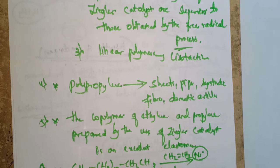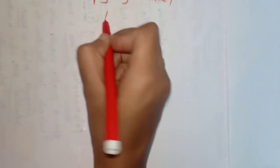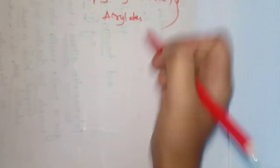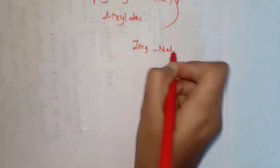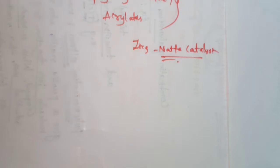These are the important applications of Ziegler-Natta catalyst. Limitations: it does not work for some monomers. For example, polyvinyl chloride and acrylates cannot be generated by this catalyst. This concludes the explanation of the Ziegler-Natta catalyst — definition, mechanism, applications, and limitations.